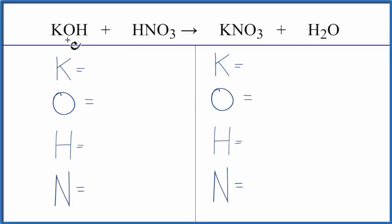In this video, we'll balance the equation KOH plus HNO3. That's potassium hydroxide and nitric acid.